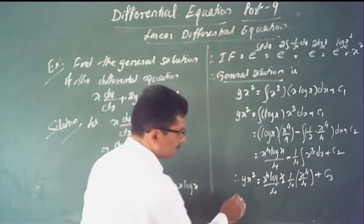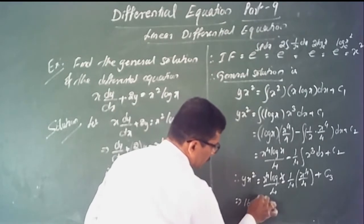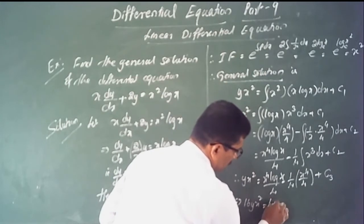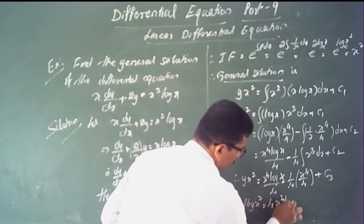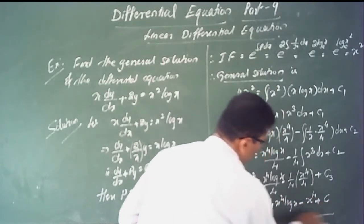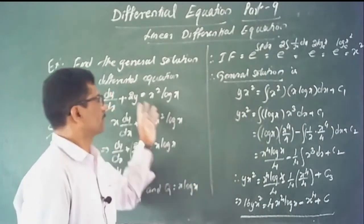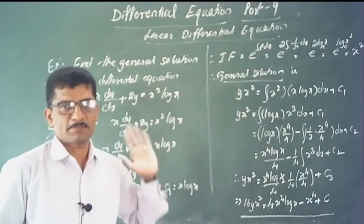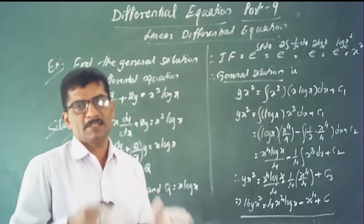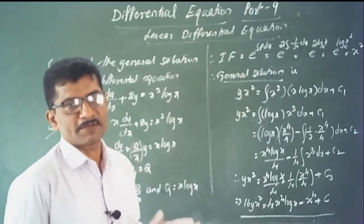Therefore, y times x squared equals x to the 4th times log x divided by 4, minus 1/4 times x to the 4th divided by 4, plus constant. Multiplying each term by 16, we get 16y times x squared equals 4x to the 4th times log x minus x to the 4th plus constant c. This is the general solution.